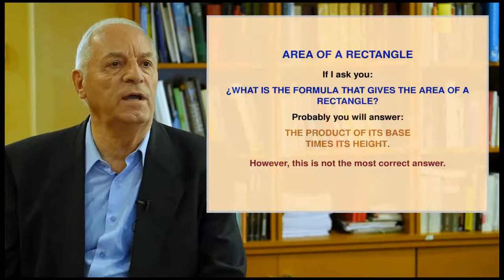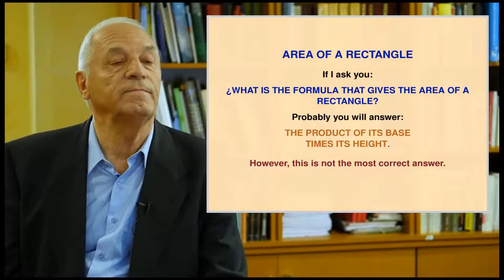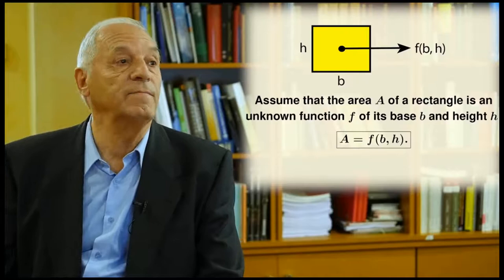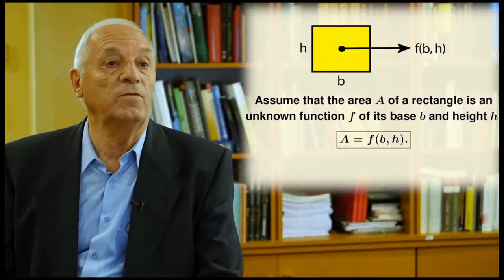If I ask you about the formula for the area of a rectangle, probably you will tell me it is the basis times the height. I am sorry to tell you that this is not the right answer. Suppose we don't know the formula for the area of a rectangle, but we know that it is a function f of the basis b and the height h. Then we need to determine what function corresponds to the right answer. To this end, we are going to impose two conditions.